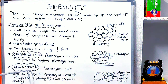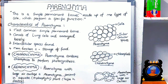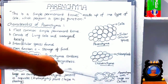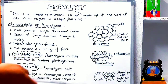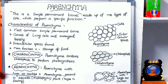The function of aerenchyma tissue is that it helps in the floating of the plant. Here in this diagram, you can see large air cavities in parenchyma, which is called aerenchyma. This is all about parenchyma tissue.